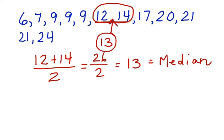What about the mode? The mode is the value that occurs the most. Let's look at this data set. Right away, you can see that 9 appears three times. So 9 is the mode of this data set.